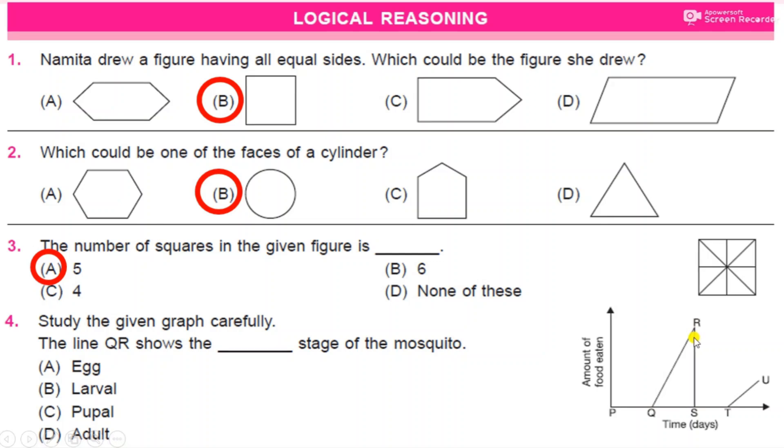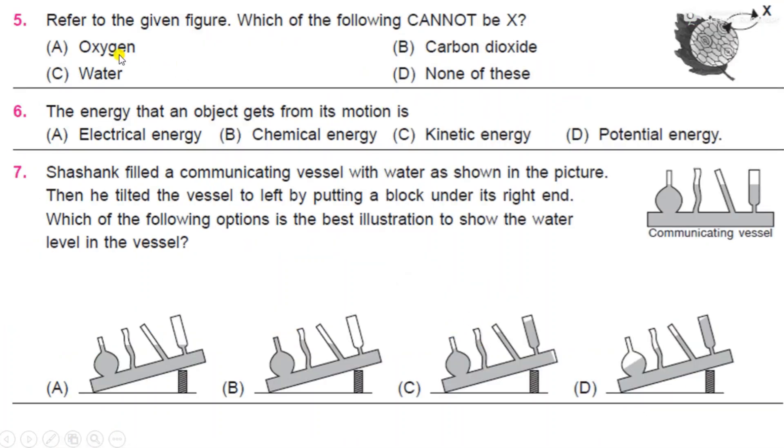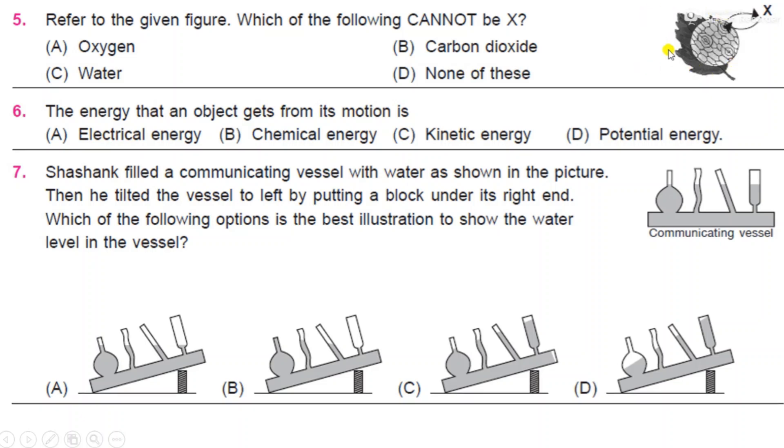Next question: refer to the given figure. Which of the following cannot be X? You need to refer to this figure. Now which of the following given options cannot be X? Oxygen, carbon dioxide, water, none of these. This is a figure of a leaf and the answer is C, water. X is not water.